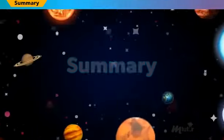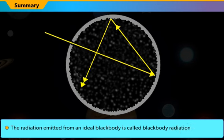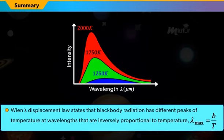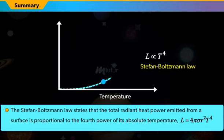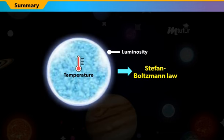Summary. In this lesson, we have learnt that the radiation emitted from an ideal blackbody is called blackbody radiation. Wien's Displacement Law states that blackbody radiation has different peaks of temperature at wavelengths that are inversely proportional to temperature: lambda max = B/T. The Stefan-Boltzmann Law states that the total radiant heat power emitted from a surface is proportional to the fourth power of its absolute temperature: L = 4π·σ·R²·T⁴. By substituting the values of luminosity L and surface temperature T in the Stefan-Boltzmann Law, we can obtain the estimated value for the radius of a star.